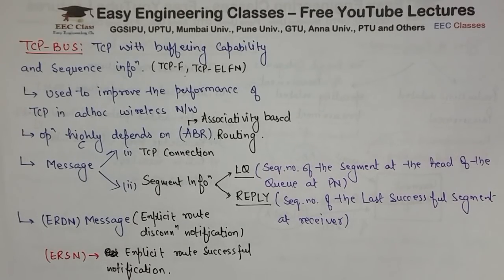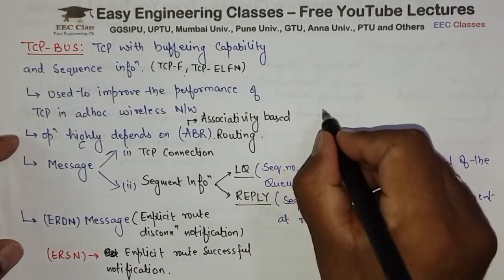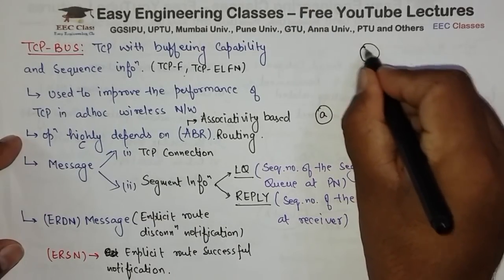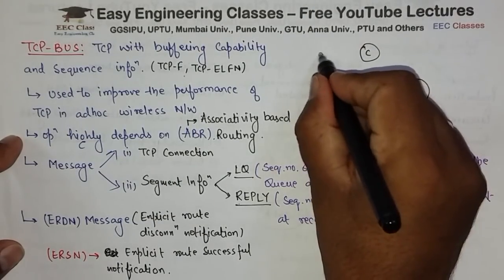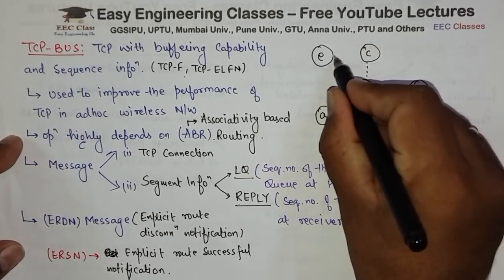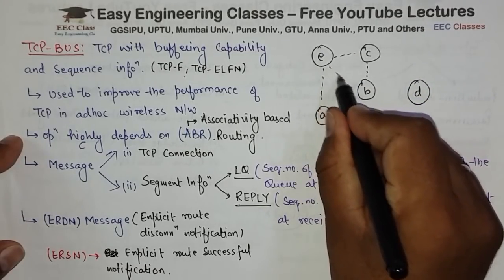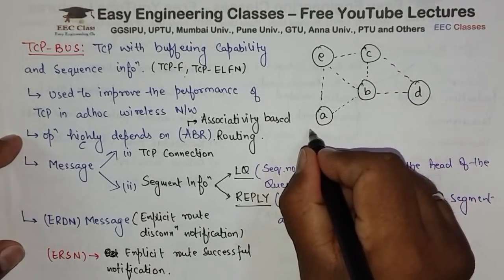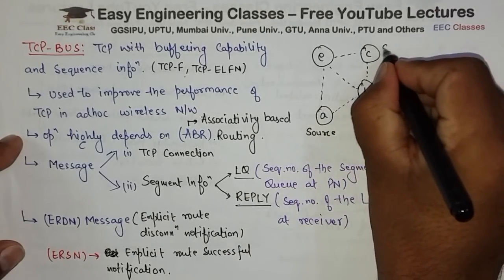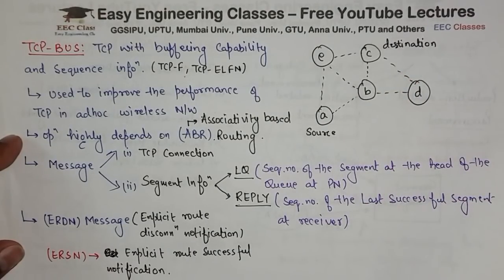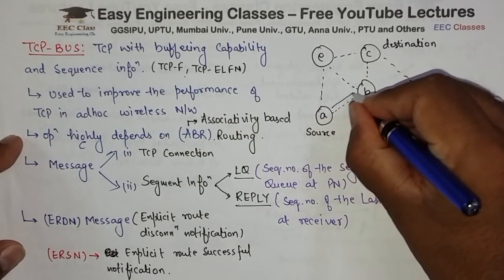So let us say humare paas kuch nodes hain. Let us say node A, node B, then we have node C, D and E. In all these nodes ke beech mein network connection hai. A humara source hai, C humara destination hai. Aur jo transmission ho raha hai starting mein, woh transmission ho raha hai A se B aur B se C.